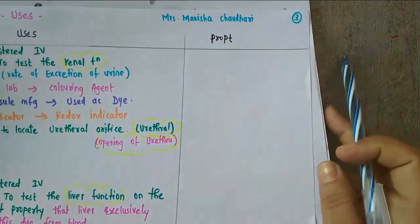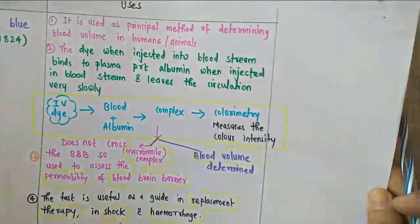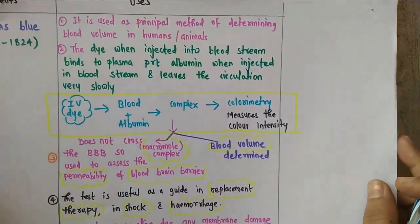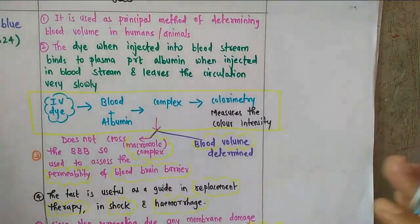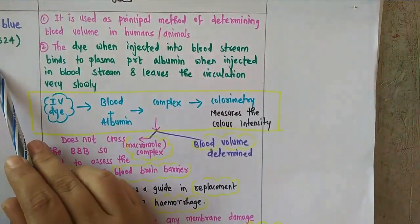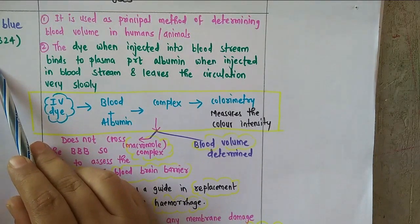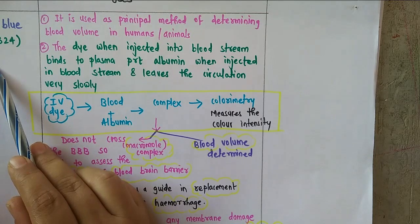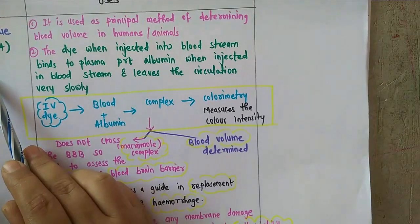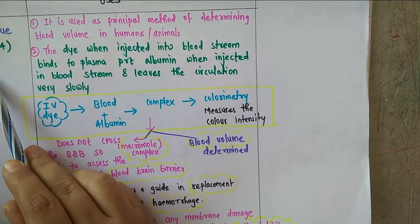Moving towards the next agent — Evans blue. Evans blue is also known as T1824. It is a diazo compound. All colorful agents — Evans blue, Congo red, and fluorescein sodium — are in the miscellaneous category and are very important from the exam point of view when it comes to uses.